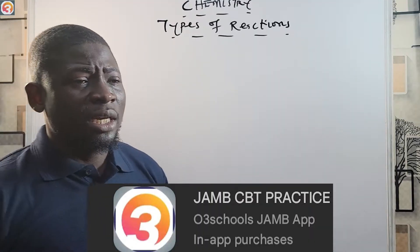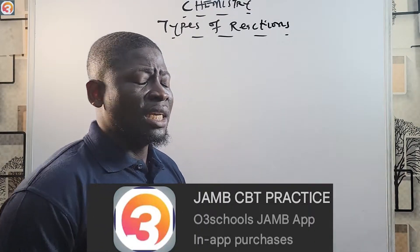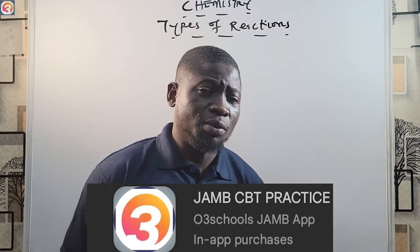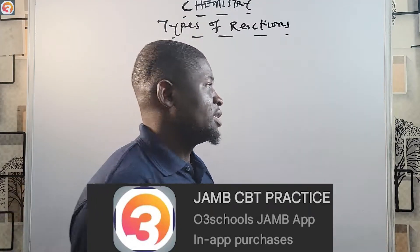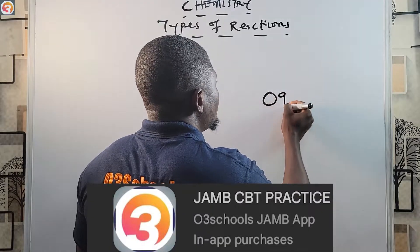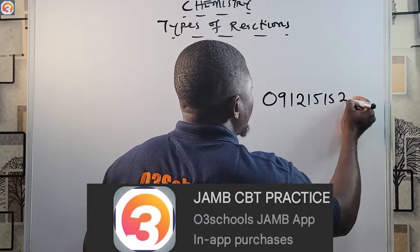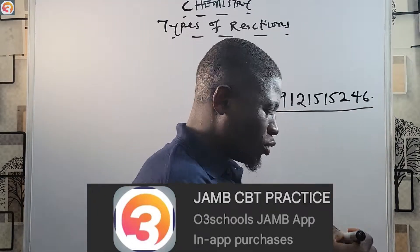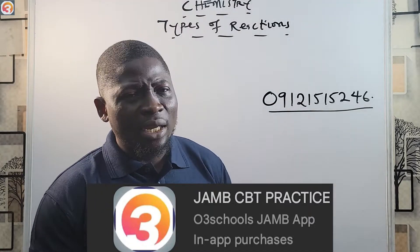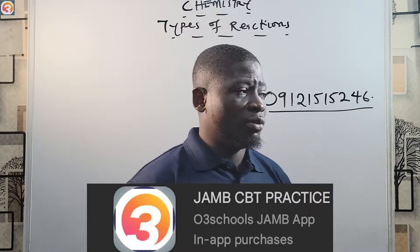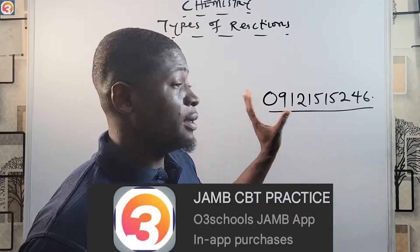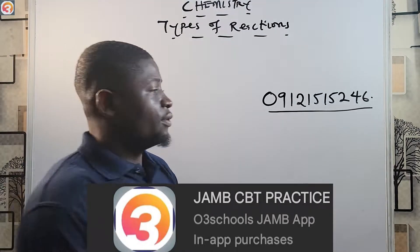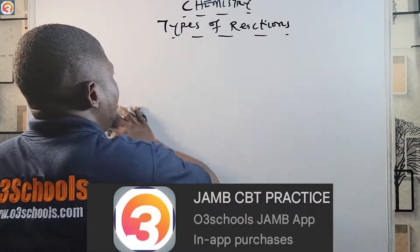This app is available for both Android phones and also for your laptop or computer. In case you want to practice with your computer without too many distractions, just send a message on WhatsApp to 09121515246. If you want to activate or get the PC version of the app, just send a message on WhatsApp — you don't need to call anybody. That is all for the app; now let's get back to types of reactions.